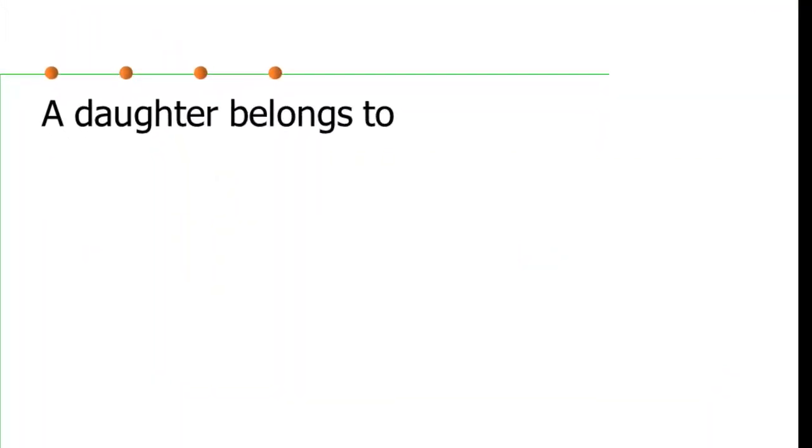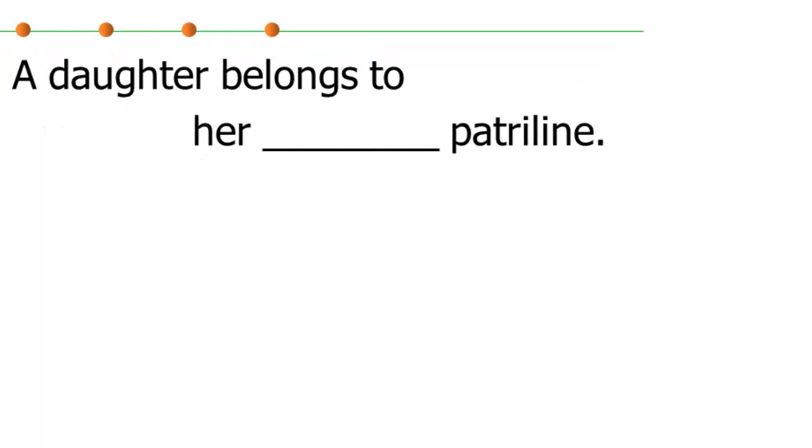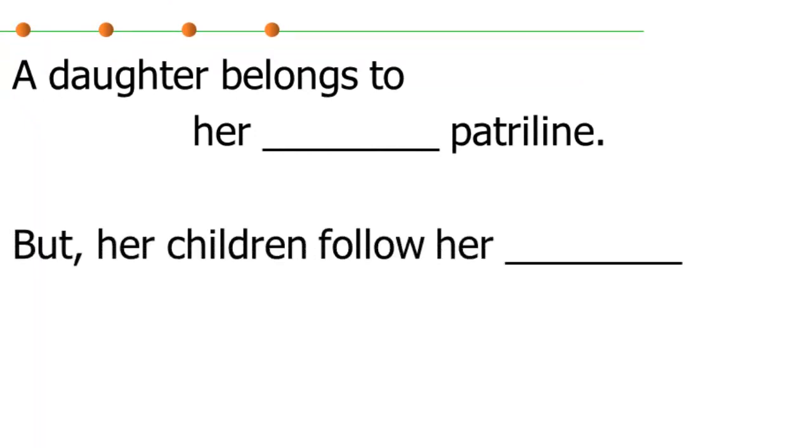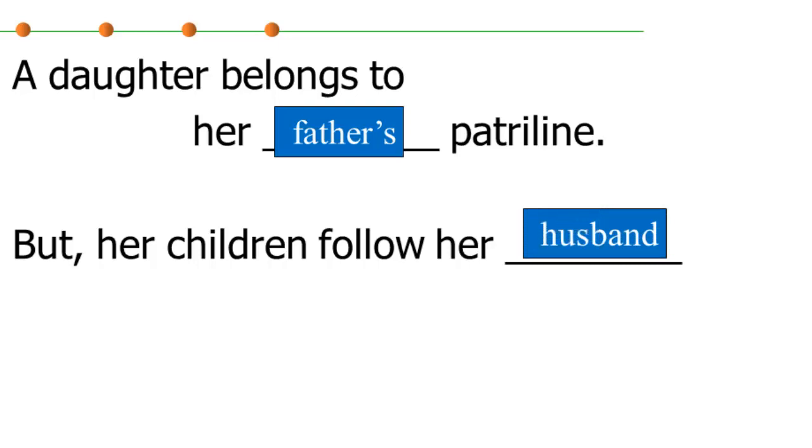Well, one answer to this is that a daughter belongs to her father's patriline, and of course a son does as well. But her children will follow her husband's patriline. So the reason why Ego's parallel cousin—and we'll explain that in the next week—the reason why she belongs to the same patrilineage, is that she joins the patrilineage of her father. But her children would follow those of her husband. And if we go back and look at that again then,